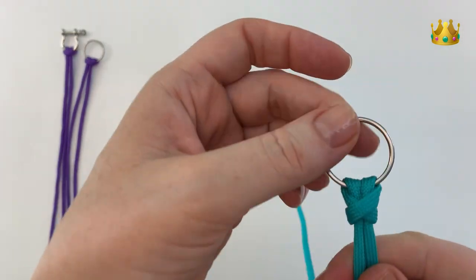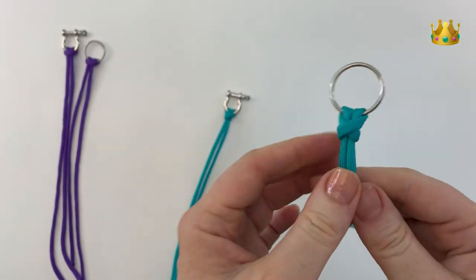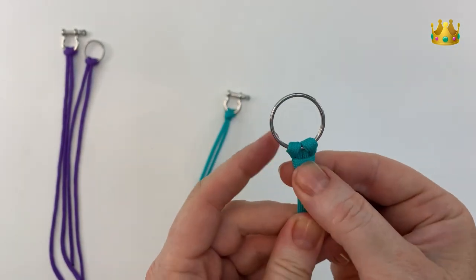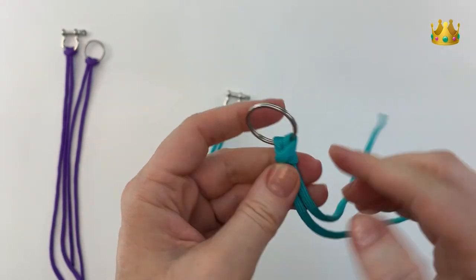So you should have a little cross at the front here and one layer of cording going across at the back. So that's your simple secure bull hitch knot.